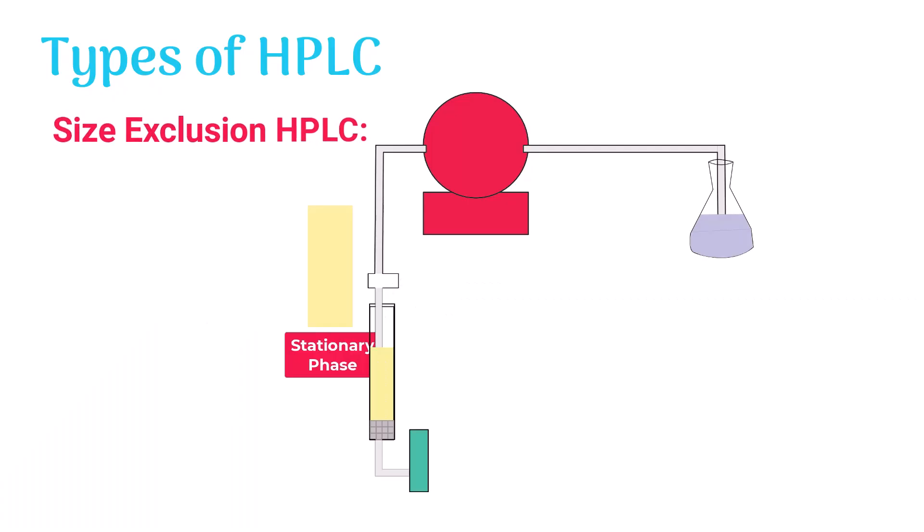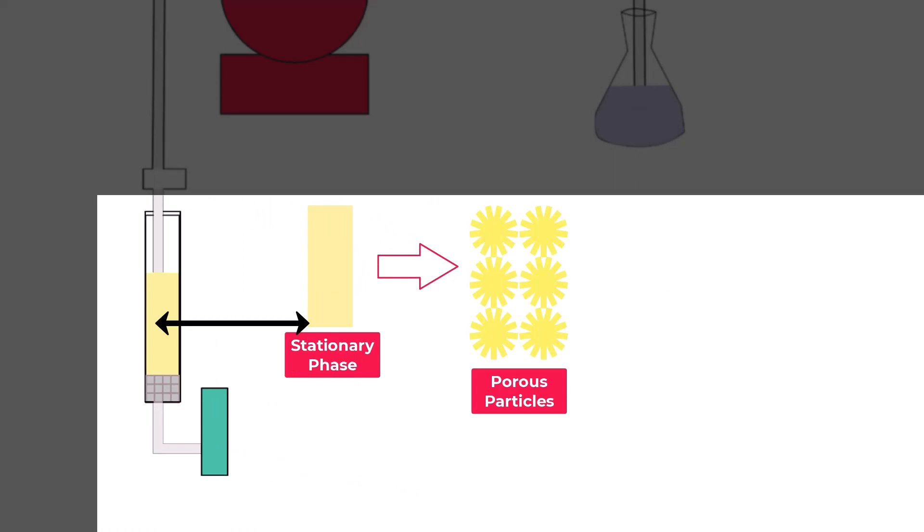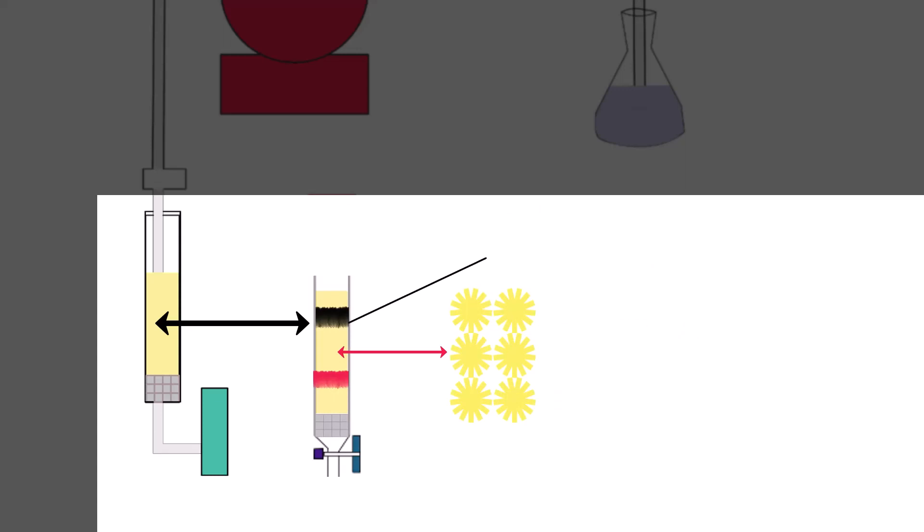Size exclusion HPLC. In this type, the stationary phase molecules are highly porous. Molecules are separated based on their size, so smaller sample molecules get arrested in these pores and move slowly.